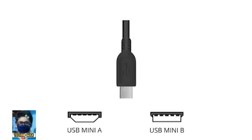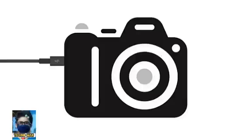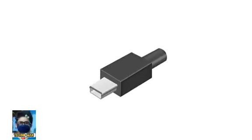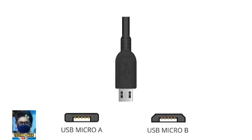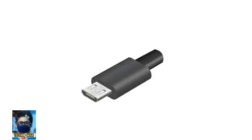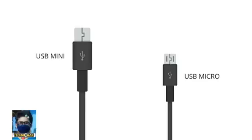Next up was USB Mini A and Mini B. Introduced in 2001, these connectors were smaller and were easier to insert correctly thanks to a defined chamfer shape at the connector end. Following this was USB Micro A and B. Micro A is a flat rectangular shape that was later replaced by Micro B, which again has a chamfer to indicate which orientation it should be inserted in. As the name suggests, these connectors were even smaller than the prior mini connectors.